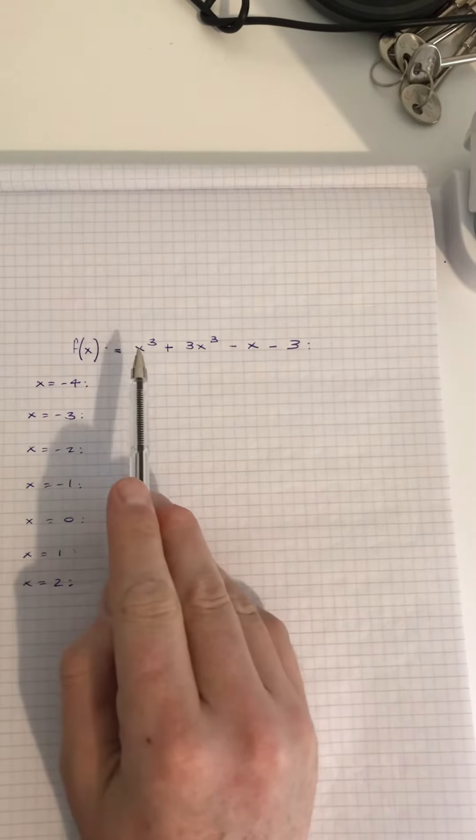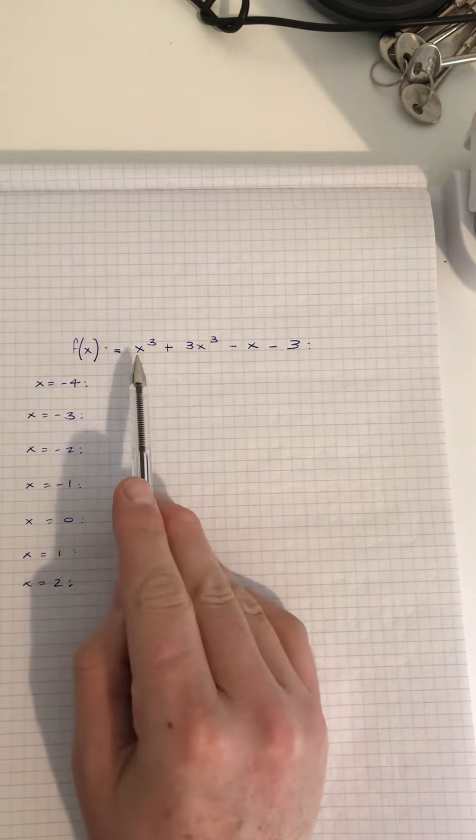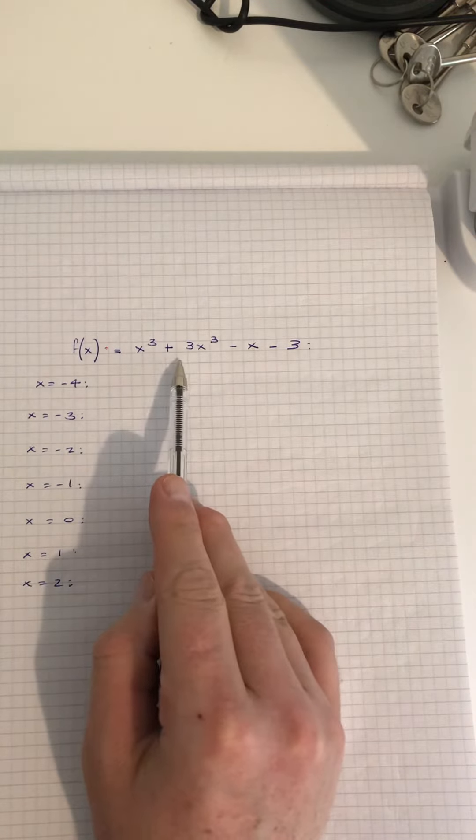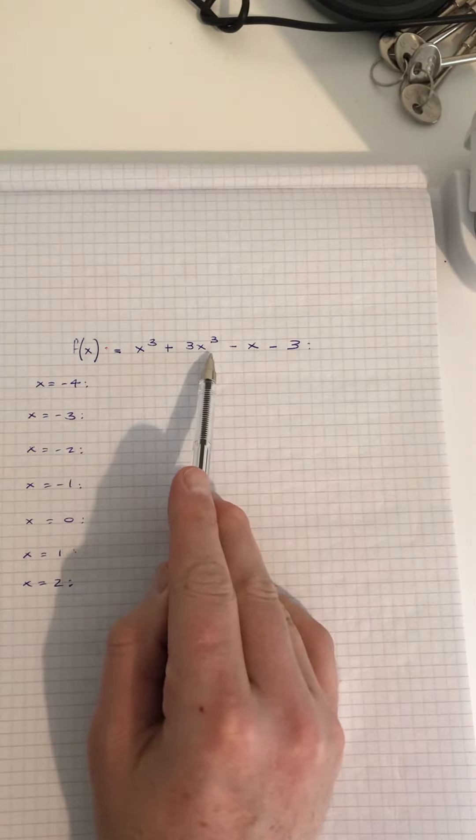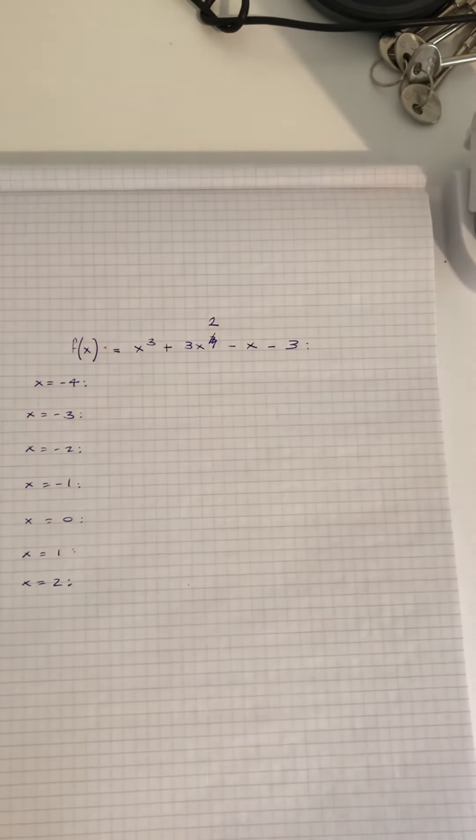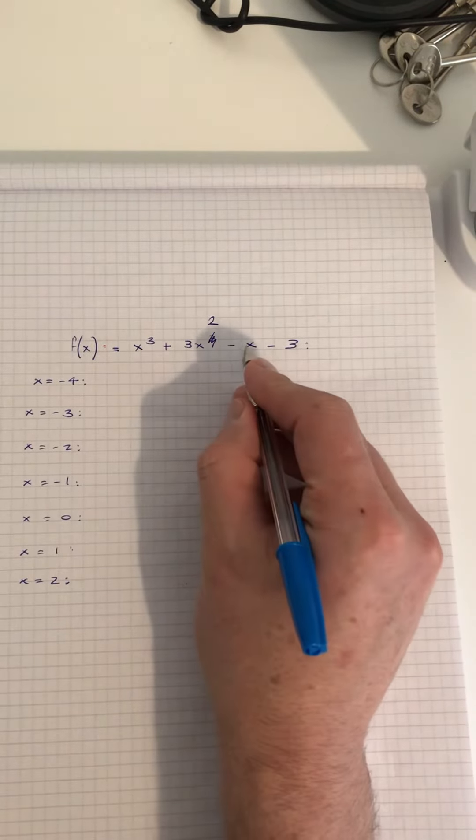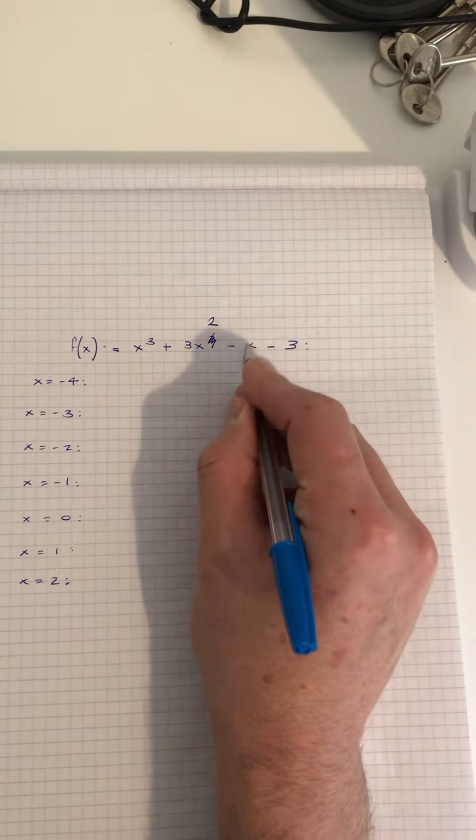So this is the function you have in question 1: x cubed, 3x cubed, but that should just say 3x squared. You see that's the first mistake. The second one here, this minus x, be careful then, always use brackets.